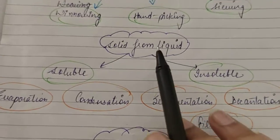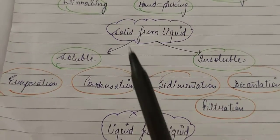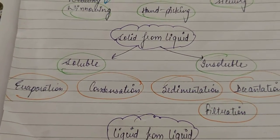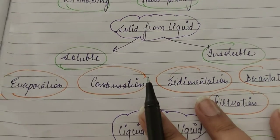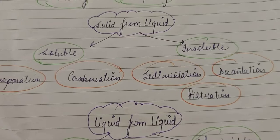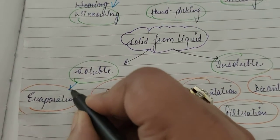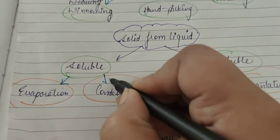Then if you want to separate a solid from a liquid, then there are two cases. You have to see whether the solid is soluble or insoluble. If your solid is soluble, like you have sugar in water or salt in water, then there are two processes: evaporation and condensation.